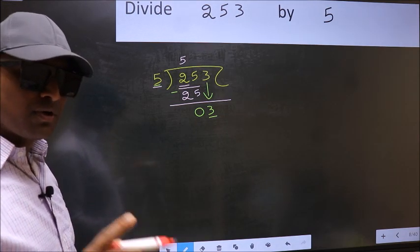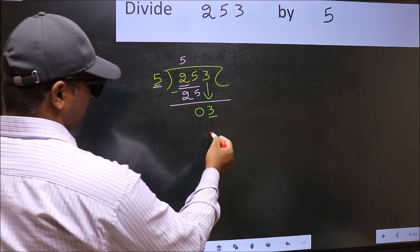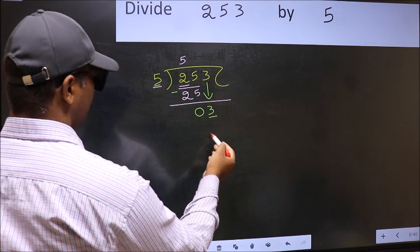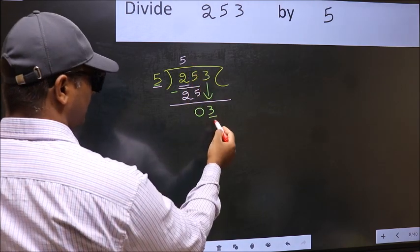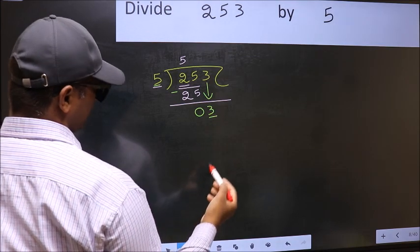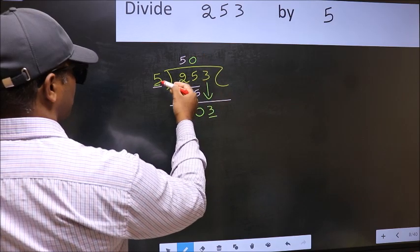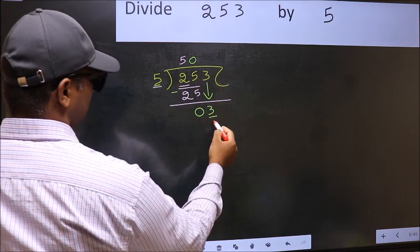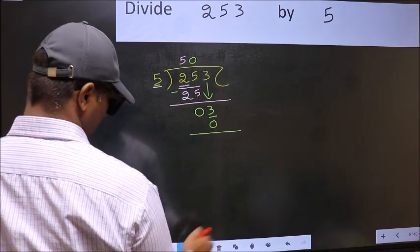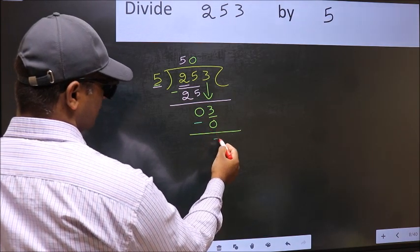Instead what you should think of doing is what number should we write here? If I take 1 here, I will get 5 but 5 is larger than 3. So what we should do is we should take 0. So 5 into 0, 0. Now you should subtract 3 minus 0, 3.